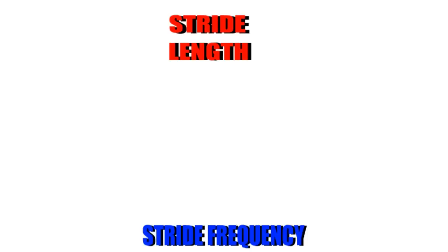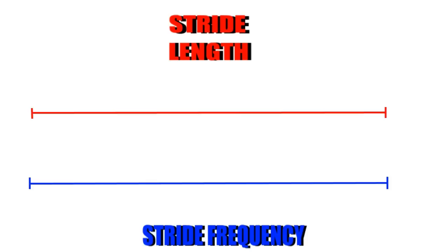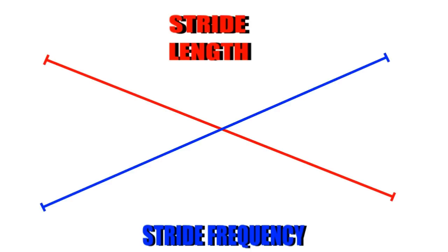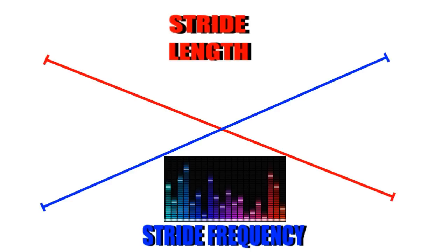My favourite word's about to come up. Stride length and stride frequency both exist on a spectrum. You're trying to find the graphic-equalising perfect balance between the two for you.